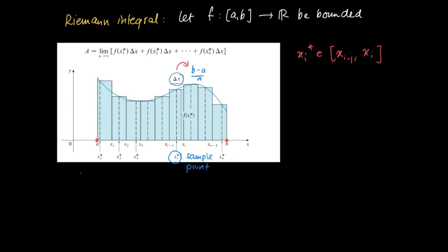The area enclosed by the i-th rectangle is given by its height, which is f(x_i*), times its width, which is Δx. This is just the contribution of the i-th rectangle.